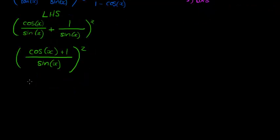Now when I square a fraction it means the numerator is multiplied with itself twice. So I've got cos x plus 1 squared and the denominator is multiplied with itself twice. So I've got sin squared x.